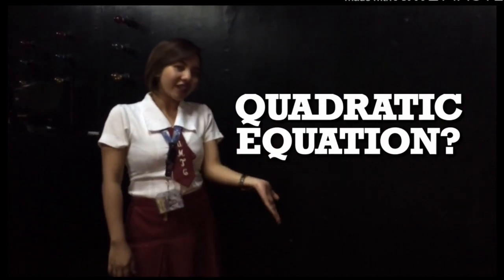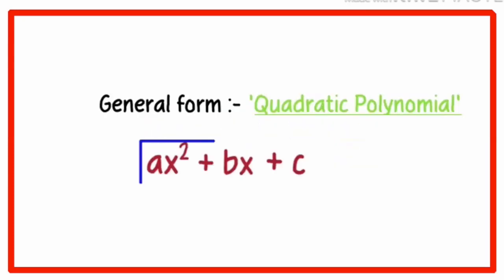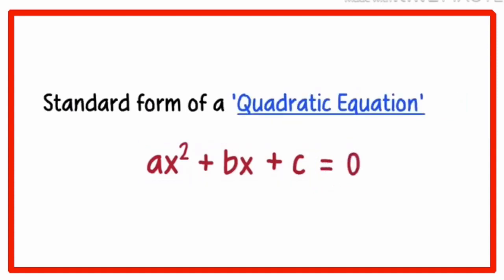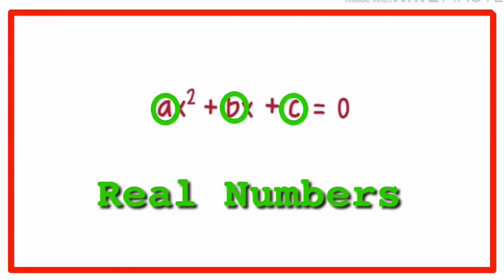So what is quadratic equation? An equation as we know always has two sides and these two sides are equal. When we equate this general form of a quadratic polynomial to zero we got the general or standard form of a quadratic equation. Remember that a is not equal to zero and the constant a, b, c are real numbers.